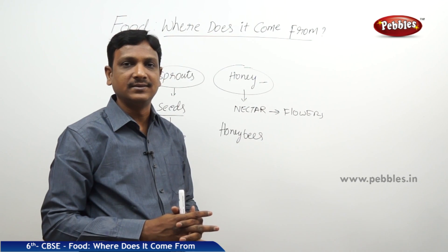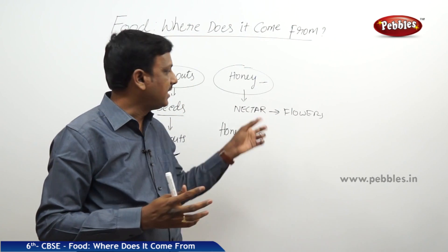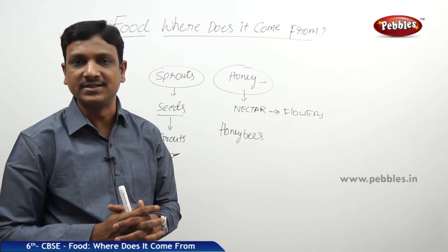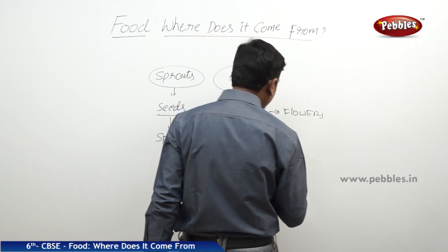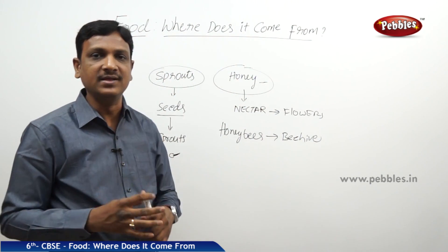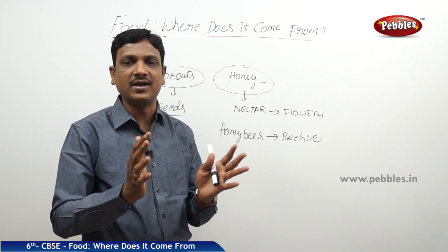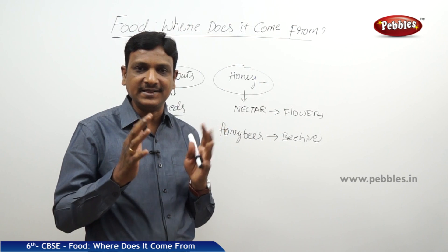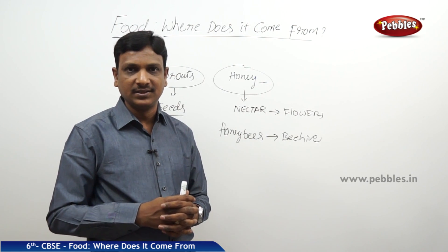So what do honeybees do? They add some enzymes to the nectar and convert it into honey. Now the honey is preserved — it is not spoiled by organisms. Honeybees keep the honey in the beehive. The beehive is the home of honeybees, having many small pocket-like rooms, and honeybees make it with beeswax. Honey stored in the beehive is very nutritious, rich in vitamins and minerals, and obtained naturally from the plant source.